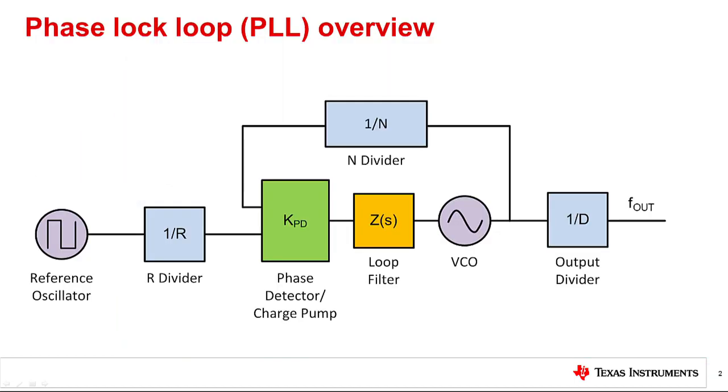Recall from Part 1 that the reference oscillator frequency, fos, is divided down by the R counter to create the phase detector frequency, fpd. The VCO frequency, fvco, is divided down by the N counter to create the feedback signal to the phase detector, which we call f sub n.